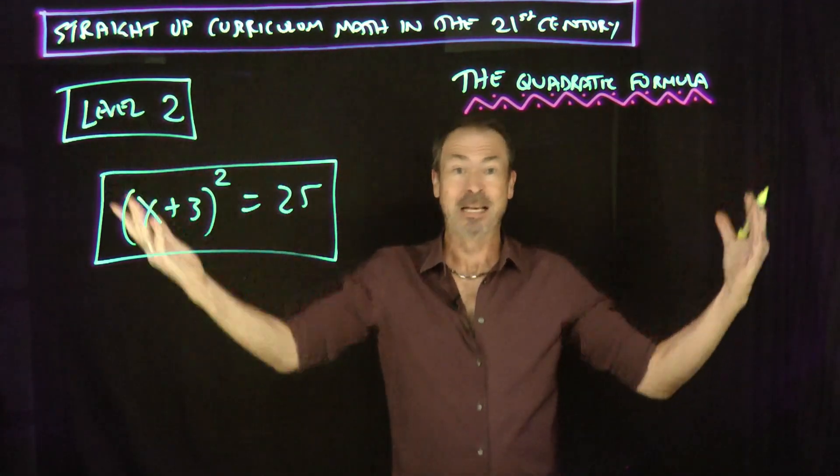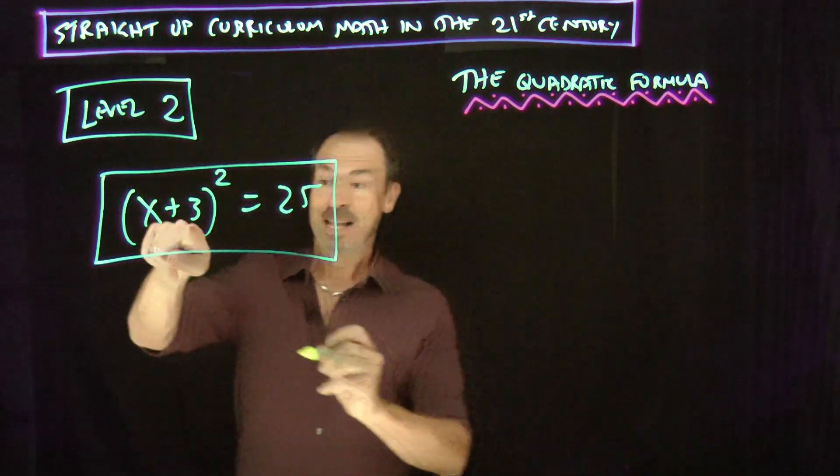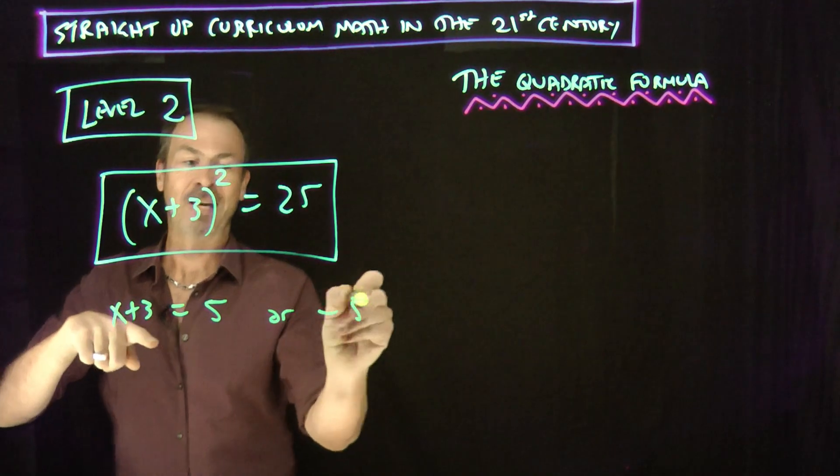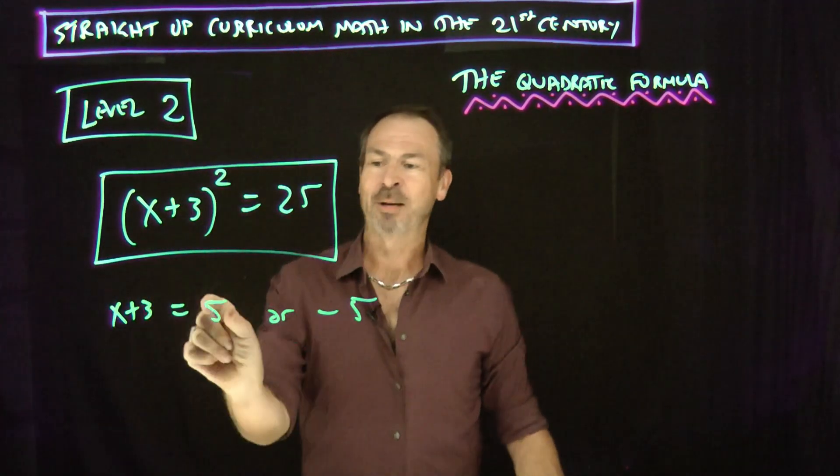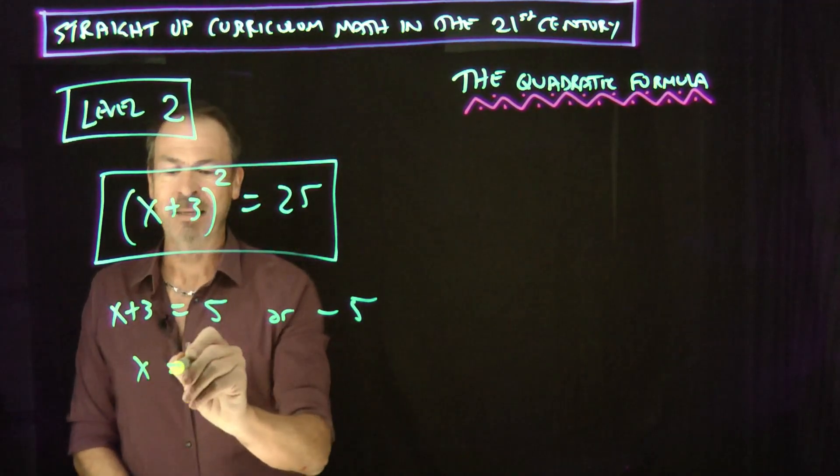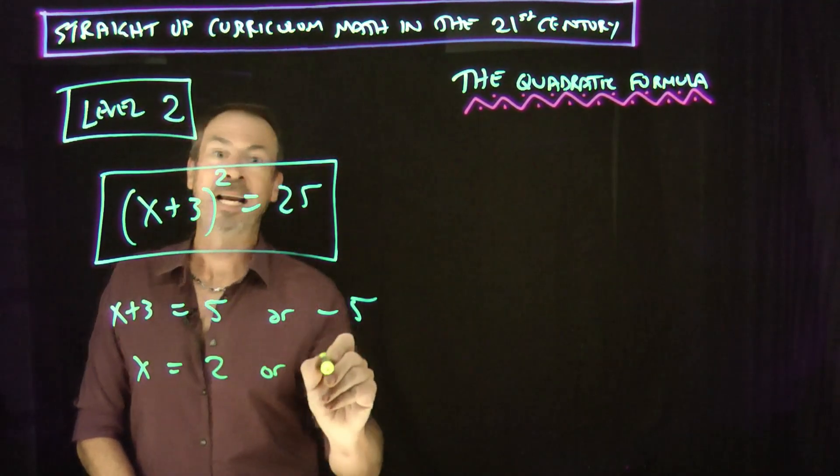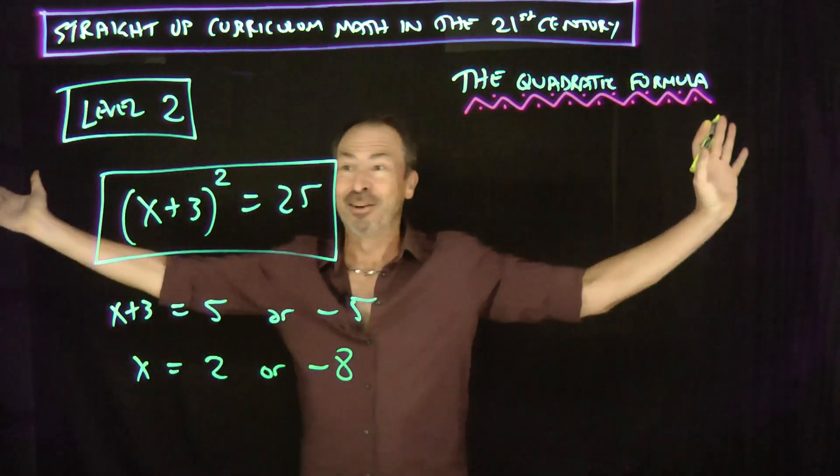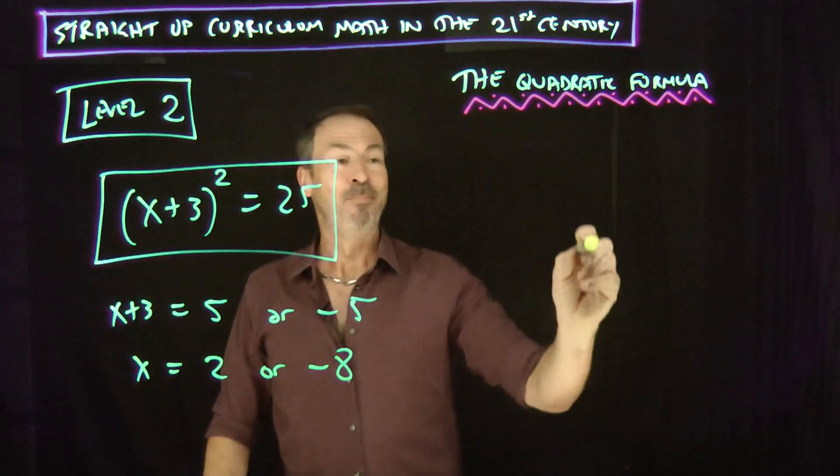Therefore, logic just tells me that something better be 5 or negative 5. That something, x plus 3, better be 5 or it better be negative 5. Oh, if x plus 3 is 5 or x plus 3 is negative 5, let me just subtract 3 and get x all by itself. x is 2 or negative 8. Beautiful. That's it. Level 2. Piece of cake.